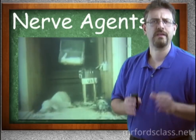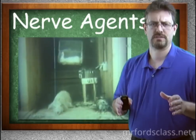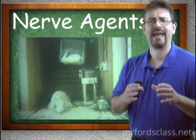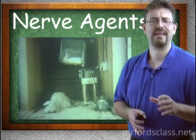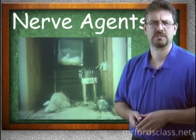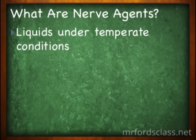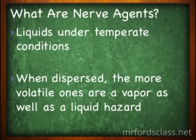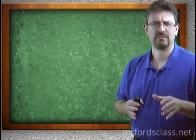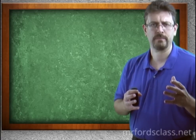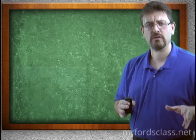So what are nerve agents? These are extremely dangerous — the most toxic and rapidly acting of all chemical weapons. These things can cause death within minutes after exposure. They are typically liquid under temperate conditions. When you disperse them, the more volatile ones present both a vapor and a liquid hazard, while others that are less volatile are primarily a liquid hazard.